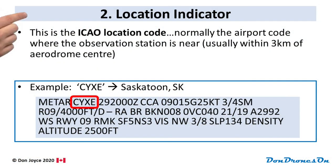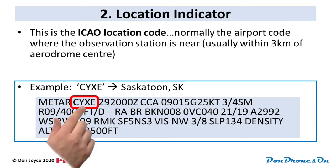The second METAR group is called a Location Indicator, and it's also very simple. This is the ICAO Location Code — normally just the airport code where the observation station is, and when it's at an airport it's within three kilometers of the center of the aerodrome. In our example, we see CYXE, which is the airport code for Saskatoon, Saskatchewan.